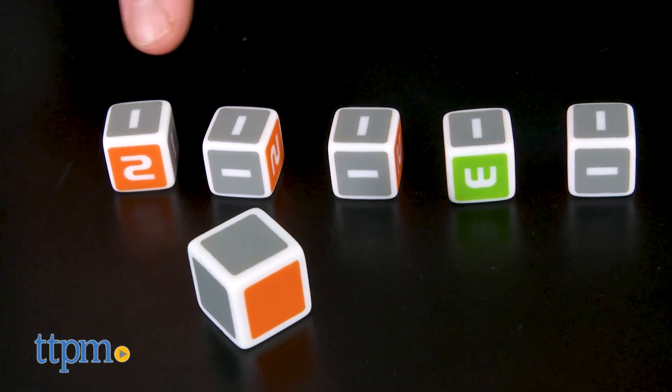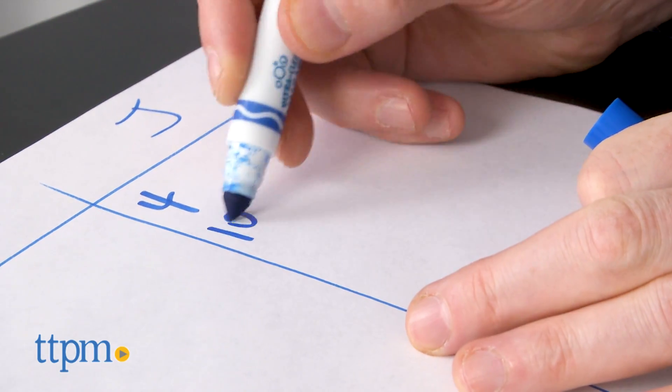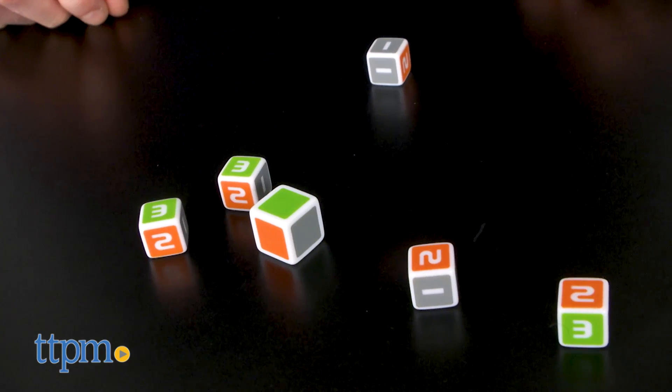A few bonuses include: score 10 points if all dice are gray, score 20 points when all dice are orange, and if all dice turn up green, you automatically win the game.